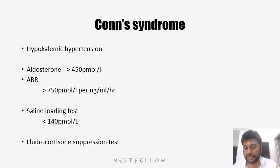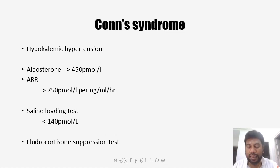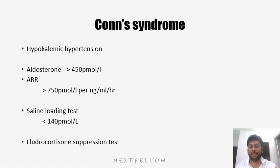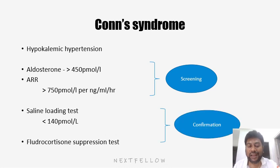Alternatively, we can also go for the fludrocortisone suppression test. This is almost similar to the dexamethasone suppression test. Dexamethasone is an artificial cortisol, whereas fludrocortisone is an artificial mineralocorticoid — an artificial aldosterone. When given in excess to the patient, by feedback mechanism it will suppress renin production and in turn should suppress aldosterone levels. But if it fails to suppress, then we can confirm the diagnosis as primary hyperaldosteronism or Khan's syndrome. So in Khan's syndrome, use aldosterone levels or aldosterone-renin ratio for screening, while for confirming the diagnosis, go for either saline loading test or fludrocortisone suppression test.